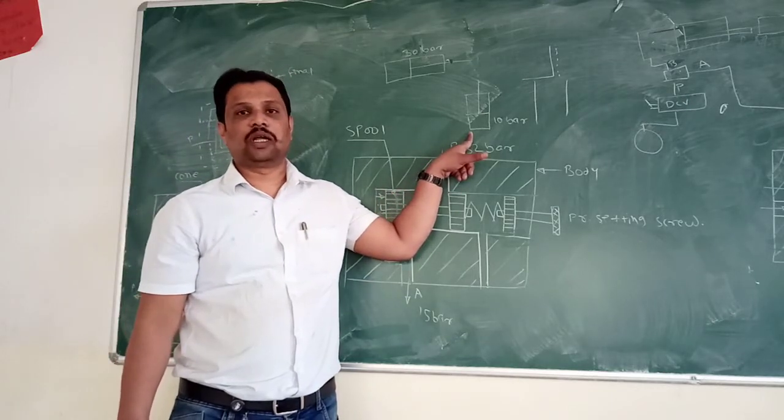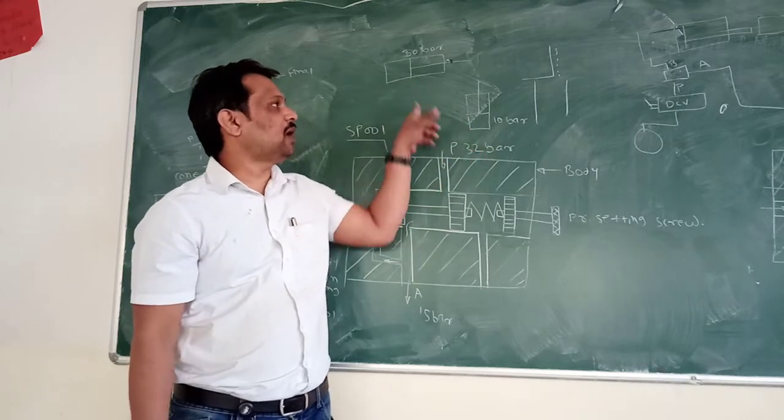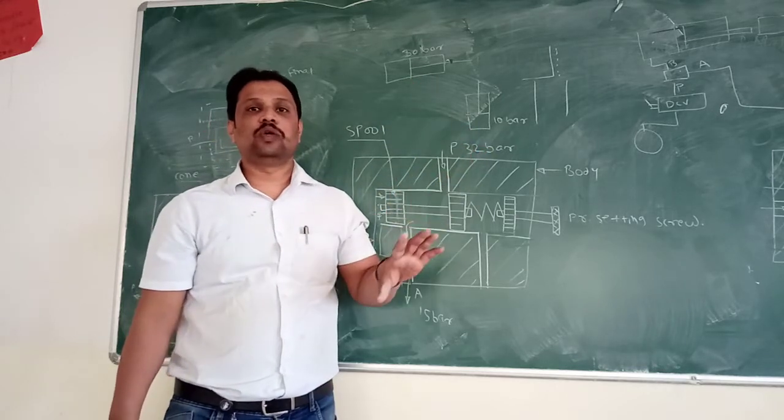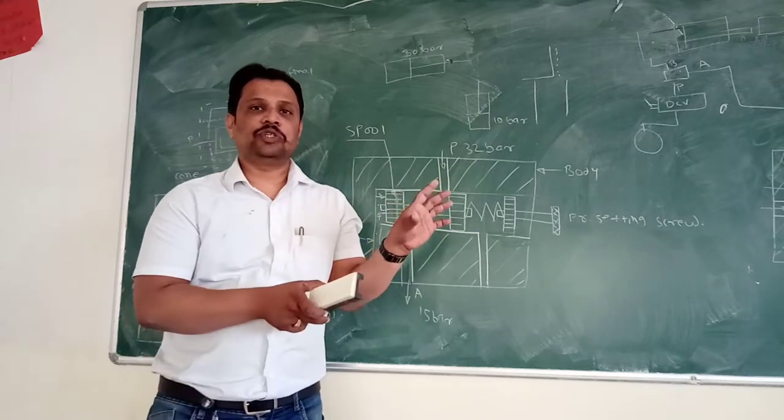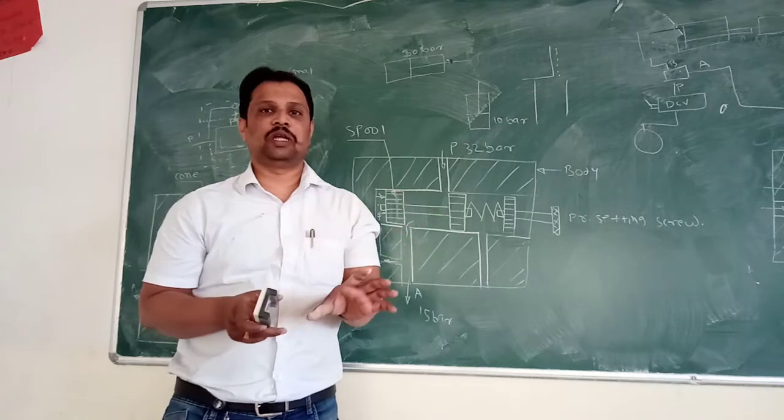So we have to reduce pressure for this hydraulic actuator, and for addressing pressure from 30 bar to 10 bar we are using pressure reducing valve. In certain portions of your hydraulic circuit, if there is a need for less pressure, then you are using this pressure reducing valve.